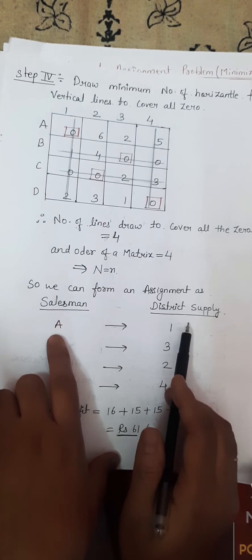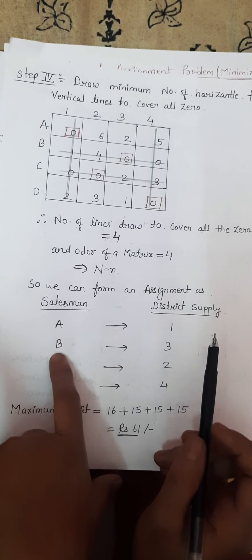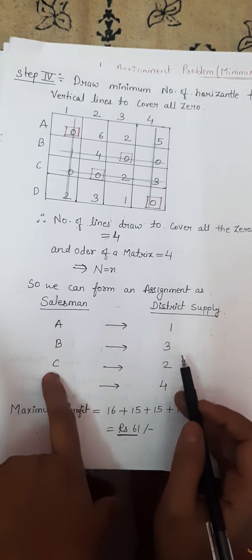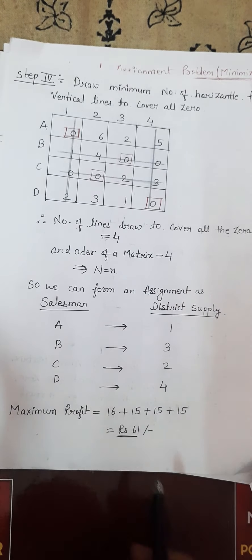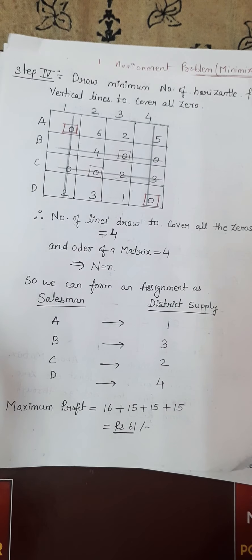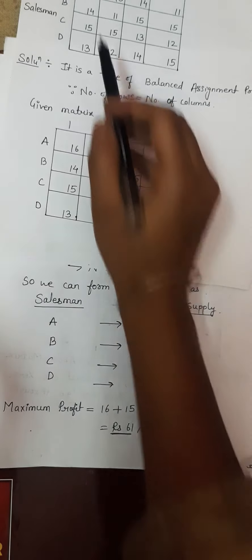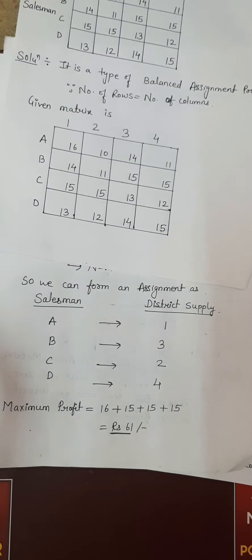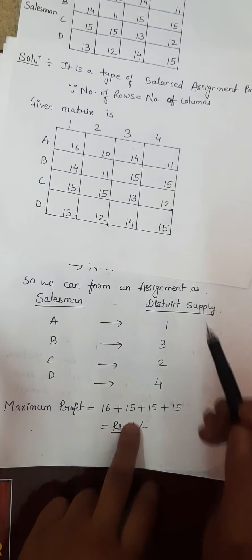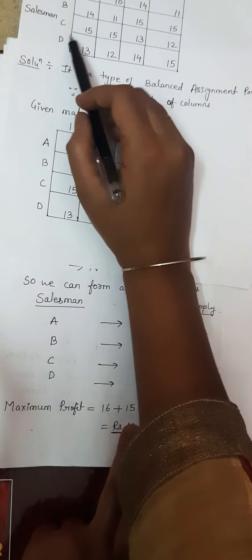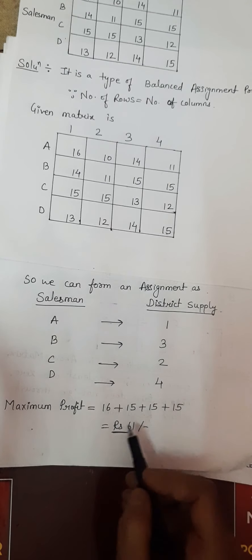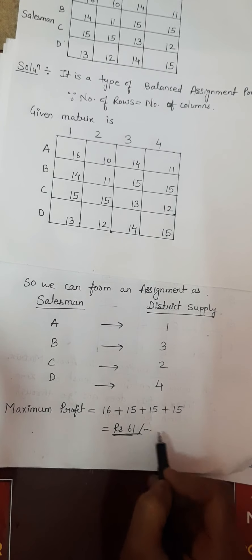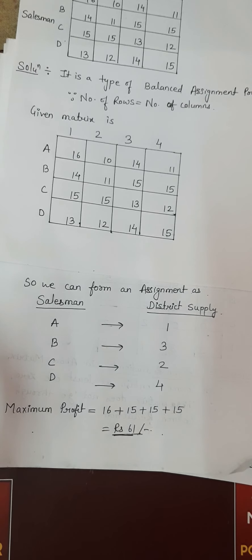The optimal assignment is: Salesman A is assigned to District 1, Salesman B is assigned to District 3, Salesman C is assigned to District 2, and Salesman D is assigned to District 4 with a profit of 15. Adding all these profit values together, we get a maximum total profit of Rupees 61 for the salesman assigned to the various districts.